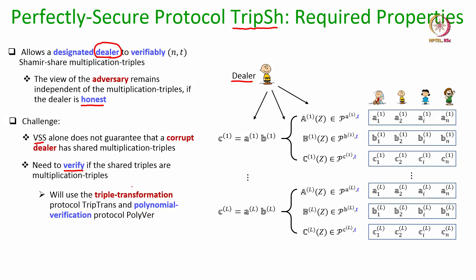On top of verifiable secret sharing, we need to add a layer of verification to verify that the secret shared triplets are indeed multiplication triplets. The challenge is that this additional layer of verification should respect the privacy of the dealer's triplets if the dealer is honest. Intuitively, what we are going to do is use the triple transformation protocol coupled with the polynomial verification protocol, which we discussed in earlier lectures, on top of the VSS to verify whether the dealer has secret shared multiplication triplets or not.